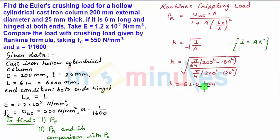Now, upon substituting the value of k and all parameters in the PR equation, we get PR equals sigma uc, which is 550 newton per mm square, multiplied by